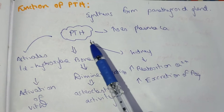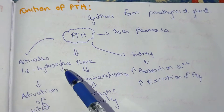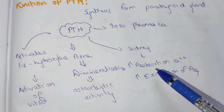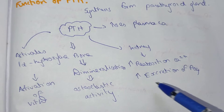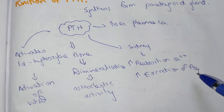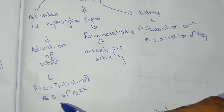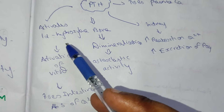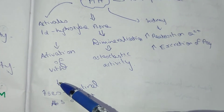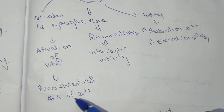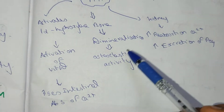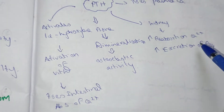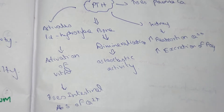PTH is synthesized from the parathyroid gland. It activates 1-alpha hydroxylase. In bone, it causes demineralization and osteoclastic activity. In the kidney, it increases reabsorption of calcium and increases excretion of phosphate. It also activates 1-alpha hydroxylase to activate vitamin D, thereby increasing intestinal absorption of calcium.